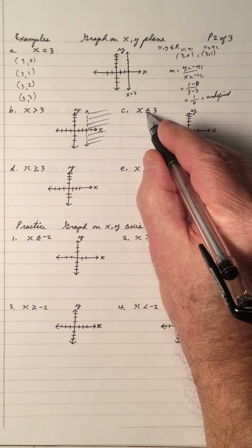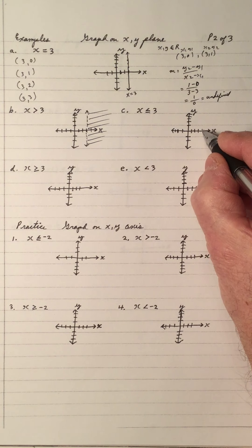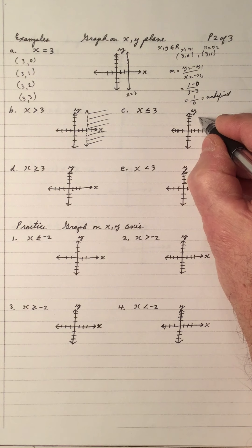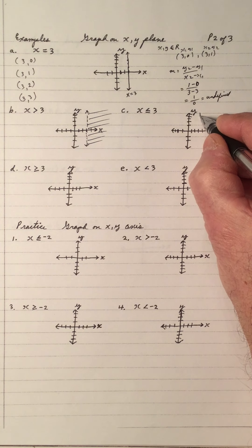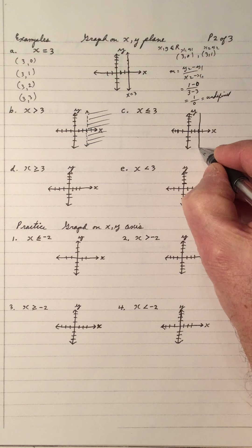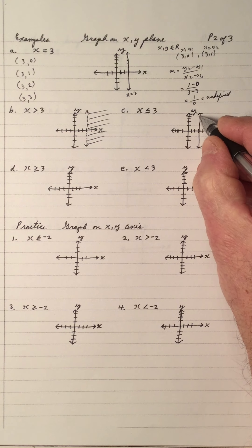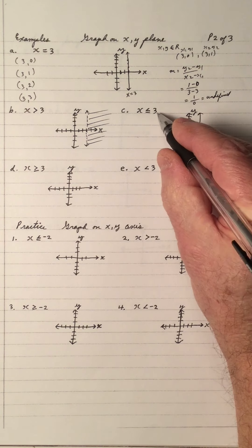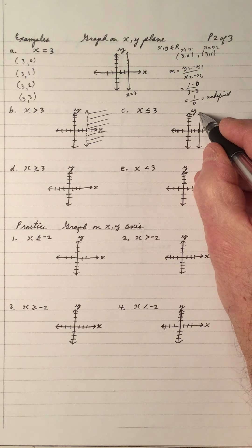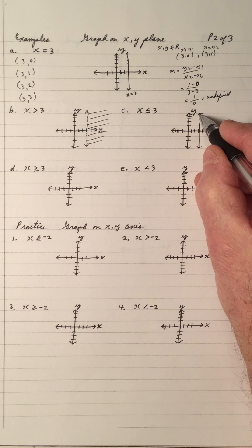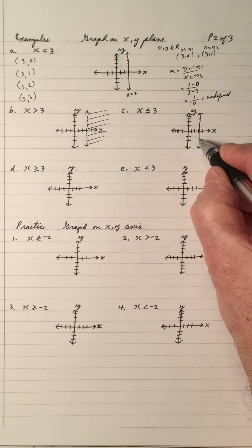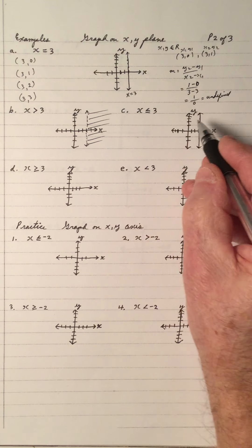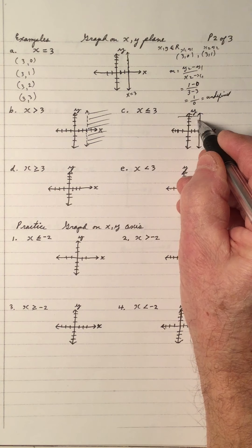The boundary line is x equals 3, but this time the boundary line is solid because of the equal sign — it's a solid vertical line parallel to the y-axis. All x coordinates on this line are 3. The y's change. And y is less than or equal to — less than is on the left.